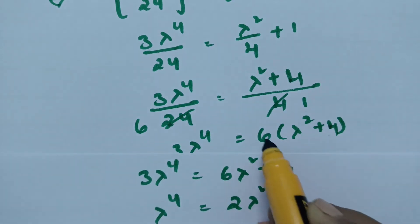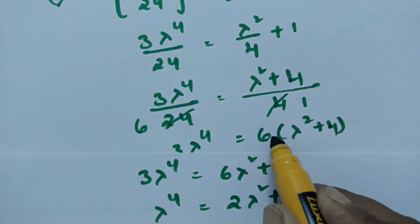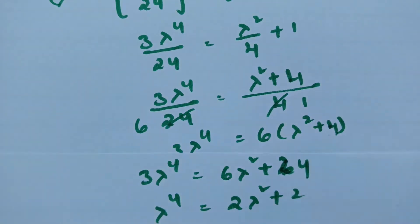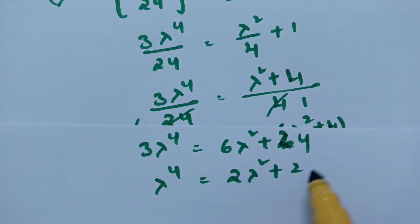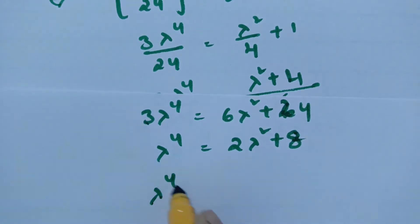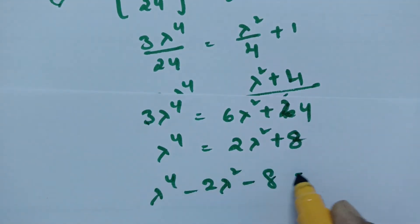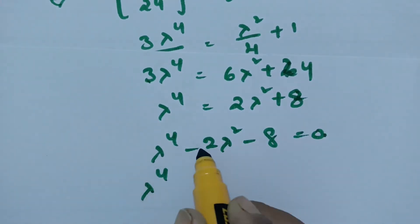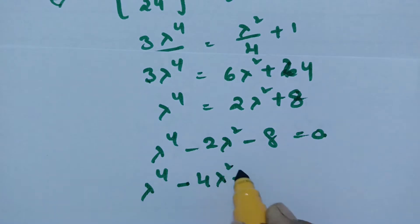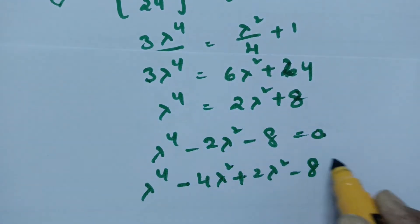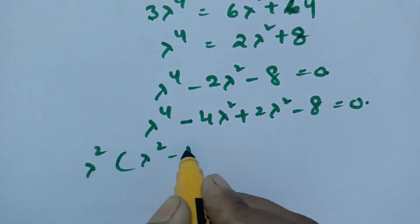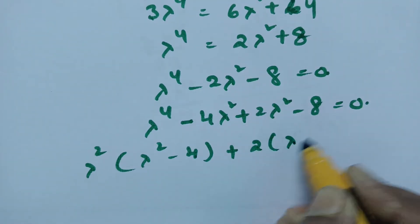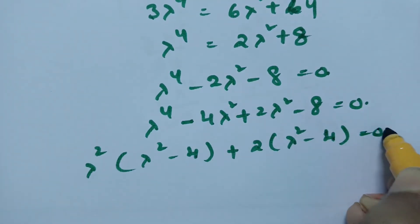Rearranging: lambda to the power 4 minus 2 lambda squared minus 8 equals 0. The middle term minus 2 lambda squared can be written as minus 4 lambda squared plus 2 lambda squared. Taking lambda squared common from the first pair gives lambda squared times (lambda squared minus 4), and taking 2 common from the second pair gives 2 times (lambda squared minus 4), which equals 0.